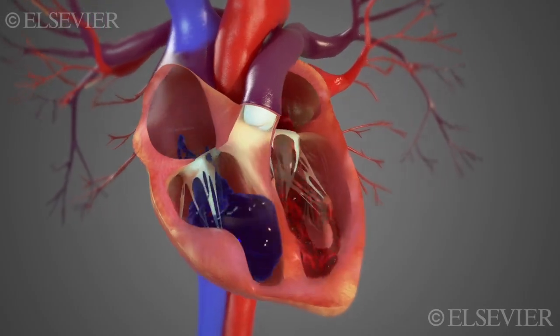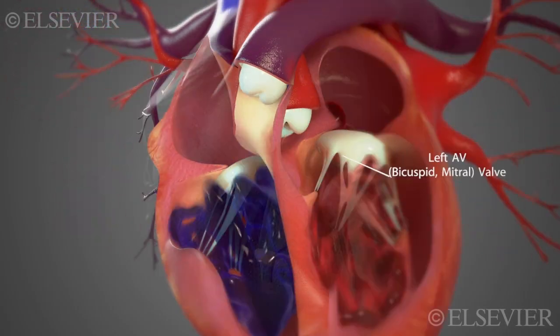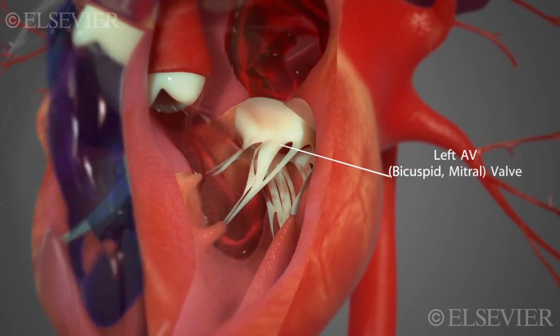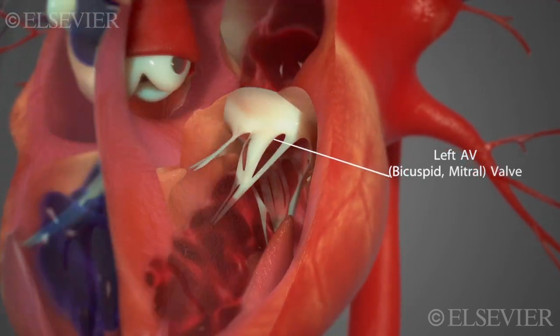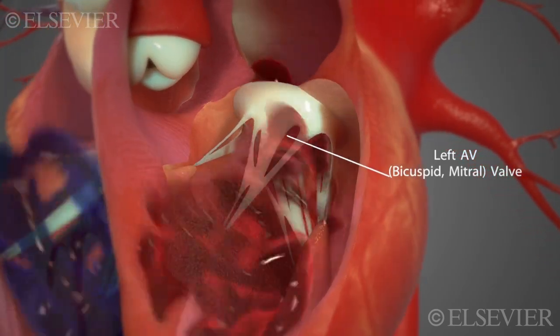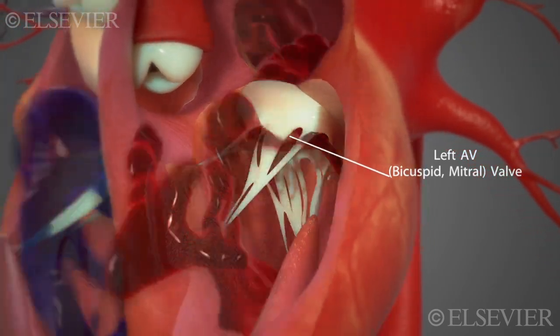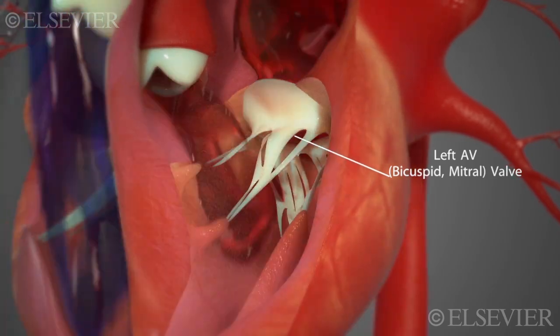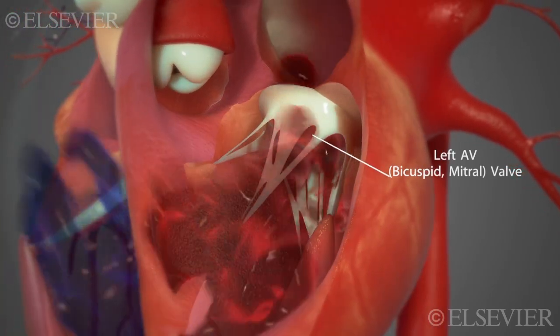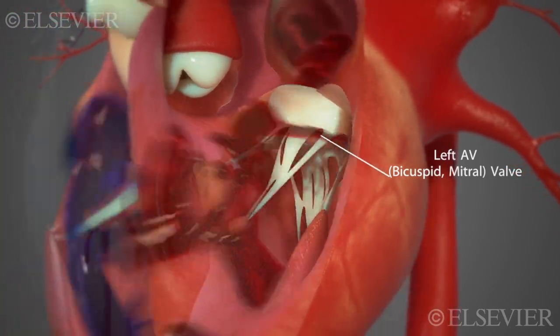Mitral insufficiency, also known as mitral regurgitation, happens when the mitral valve leaks, causing blood to flow backwards from the left ventricle into the left atrium when the left ventricle contracts.